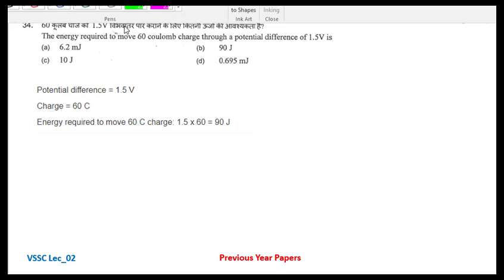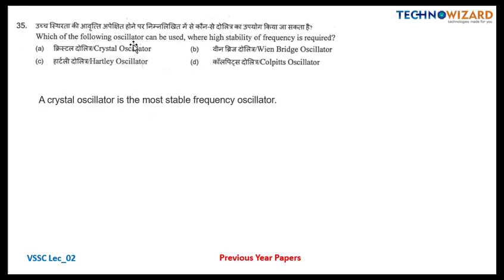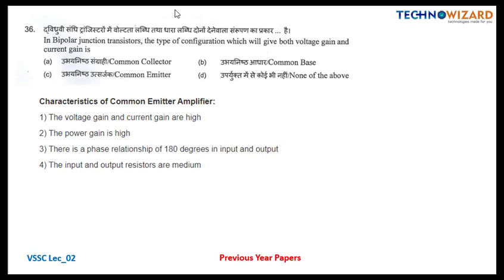Question number 34: the energy required to move 60 coulomb charge through a potential difference of 1.5 volts is 1.5 × 60 = 90 joules — option B is the correct answer. Question number 35: which oscillator is used where high frequency stability is required? Crystal oscillator — option A.